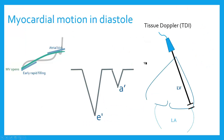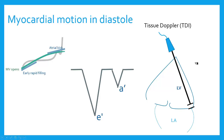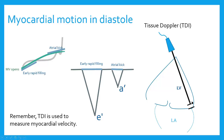Deceleration time is another measure of left ventricular stiffness or compliance. We said A velocity is reflective of compliance — so is deceleration time, because at this point the myocardium is no longer actively relaxing. It's really the stiffness or compliance that determines this deceleration time. Now we're going to talk about tissue Doppler, which is the other huge ingredient to understanding diastolic function. Tissue Doppler is used to measure myocardial velocity — it blocks out blood flow signals and only looks at slow-moving structures like the myocardium.